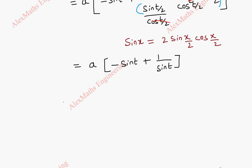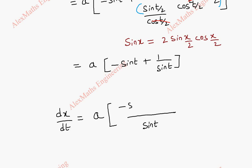So finally we have a·(minus sin t + 1/sin t). Taking LCM, dx/dt is a·(sin t − sin²t + 1)/sin t. In the numerator, 1 − sin²t is cos²t, so dx/dt = a·cos²t / sin t.